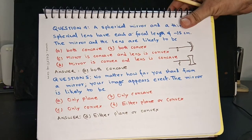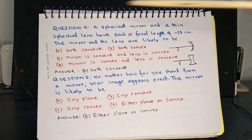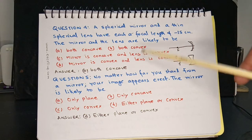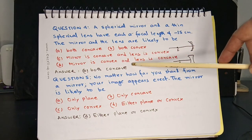Question 4: A spherical mirror and a thin spherical lens each have a focal length of minus 15 centimeters. The mirror and lens are likely to be: a) both concave, b) both convex, c) mirror concave and lens convex, d) mirror convex and lens concave. The answer is a) both concave.